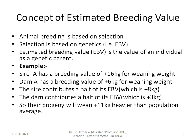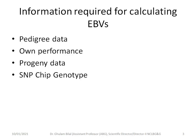So their progeny will wean 8 + 3 = 11 kg heavier than the population average. To calculate EBVs, we typically need at least one of the following: pedigree, the animal's own performance, progeny records, or more recently, SNP chip genotype or marker information.